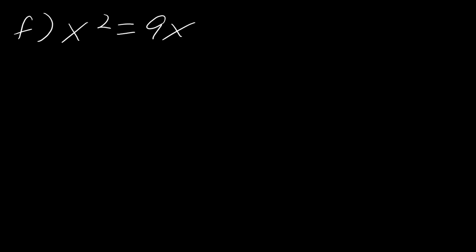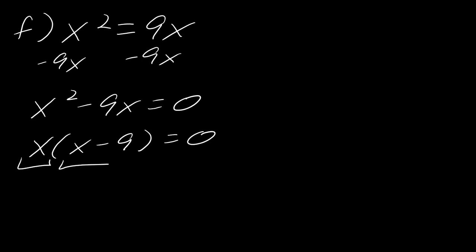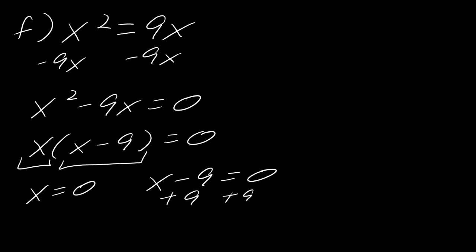For example f, we have x squared equals 9x. Sometimes people try to divide by x — that's not factoring. To factor, I need to collect everything over to one side, so I subtract 9x to get x squared minus 9x equals zero. The only thing I can factor out here is a GCF: this gives x times x minus 9 equals zero. The first factor gives x equals 0, and setting x minus 9 equal to zero and solving gives x equals 9. So my solutions are x equals 0 and x equals 9.